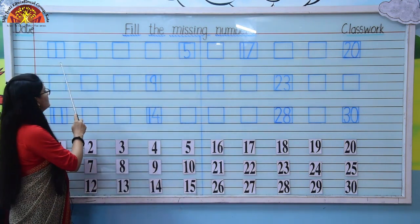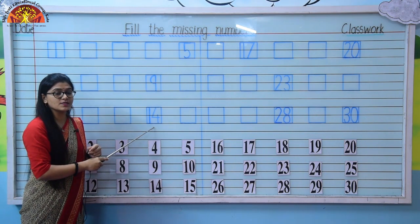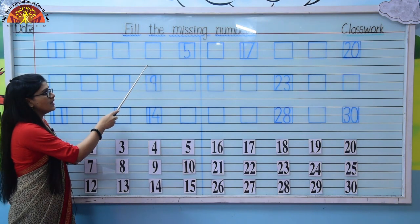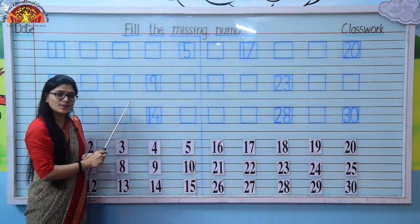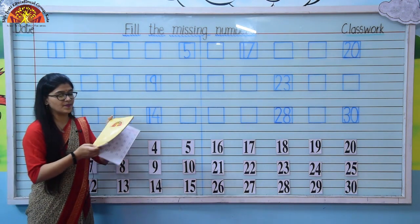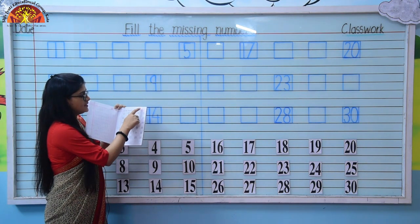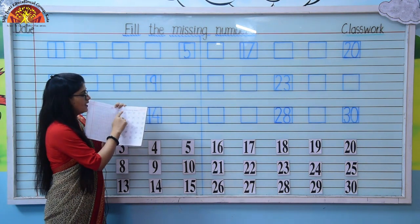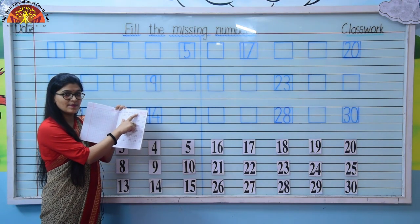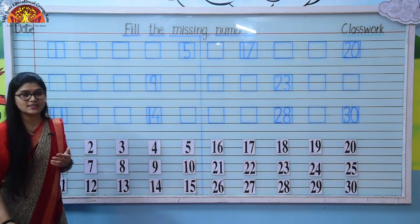As you can see, some numbers are written over here in the box, and some are missing. We have to write the missing numbers. Everyone take out your practice notebook and mention date, classwork, and heading: Fill the missing numbers. Now let's start writing.